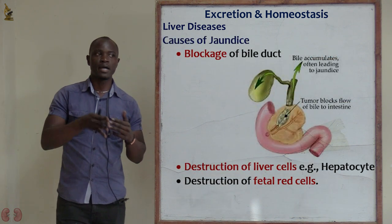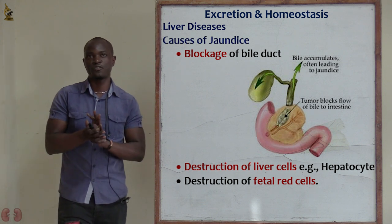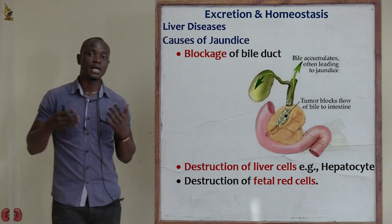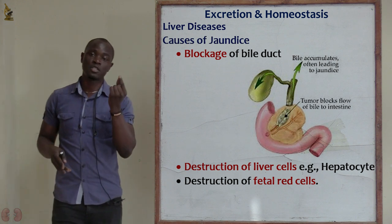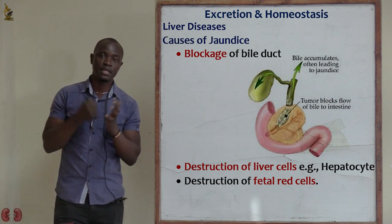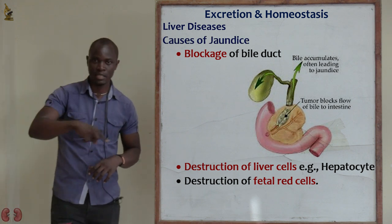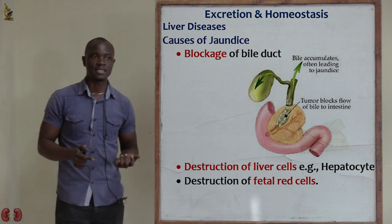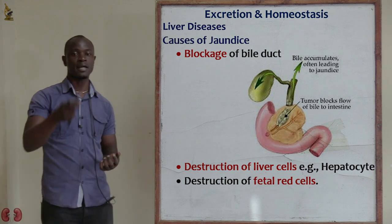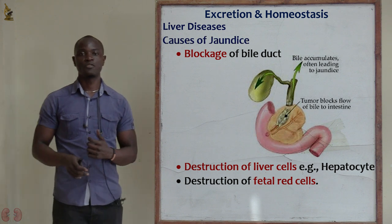Apart from excess bile in the blood, jaundice can also be caused by blockage of the bile duct. If the bile duct is blocked, bile cannot leave the liver for digestion or excretion. There will be a buildup of bile in the liver, and as blood passes through, it carries traces of bile — so blockage of the bile duct can also lead to jaundice.